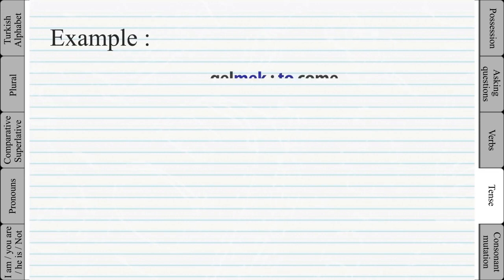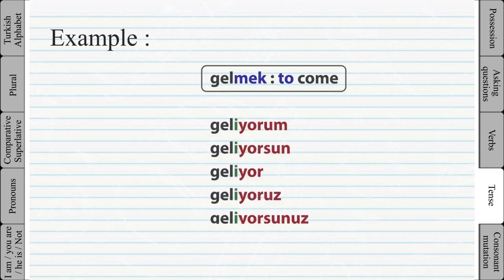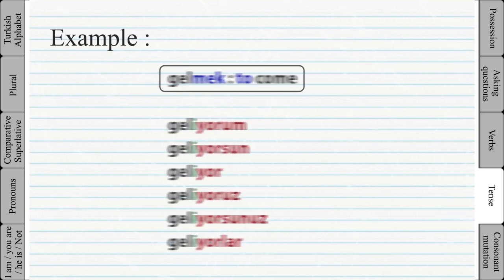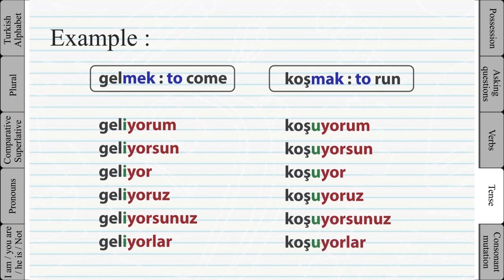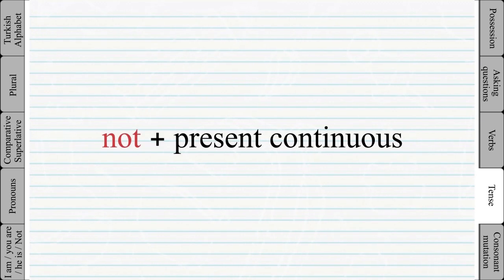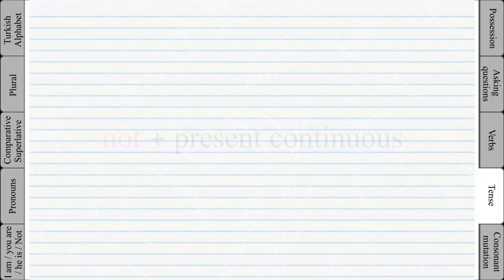Let's look at a few examples — you will notice that the only thing that is changing is the first vowel of the tense suffix. To make the present continuous tense negative is super simple: you only have to add the letter M after the verb root.